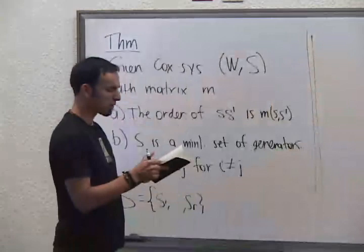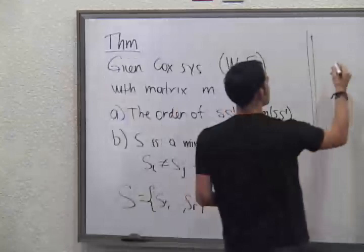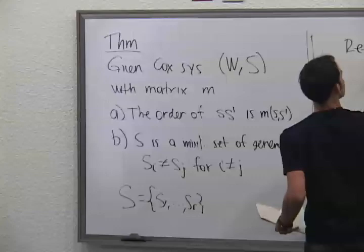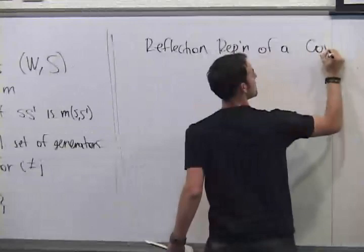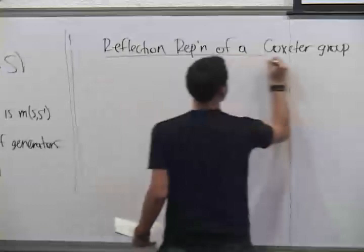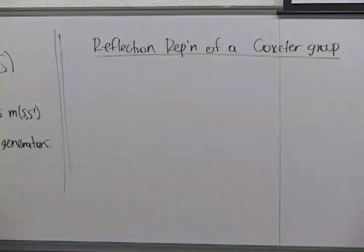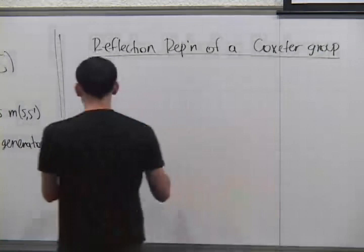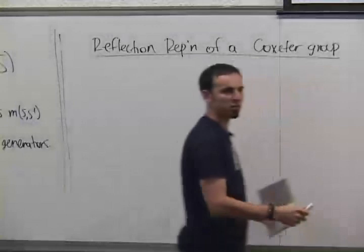To do that, we're going to do some geometry. The topic of today is the reflection representation of a Coxeter group. The idea is that we define a Coxeter group in an abstract way, but I showed you already how you can see it as a group of signed permutations. Today, we want to think of a Coxeter group as a geometric thing. And to do this, we should talk a little bit about the origin of Coxeter groups.